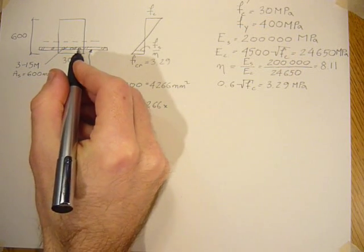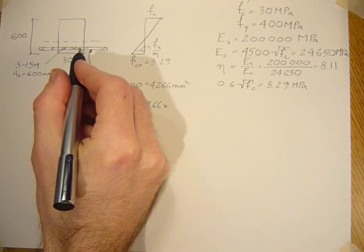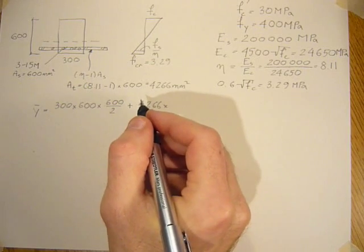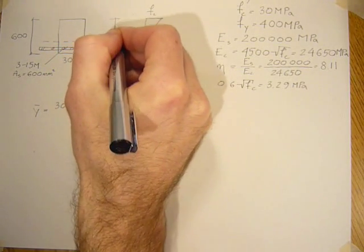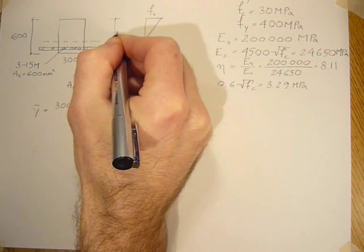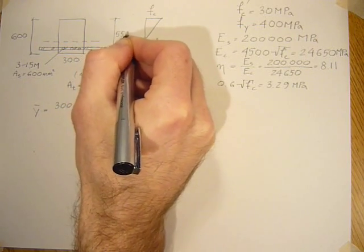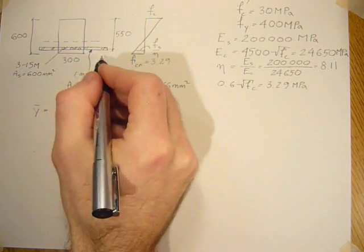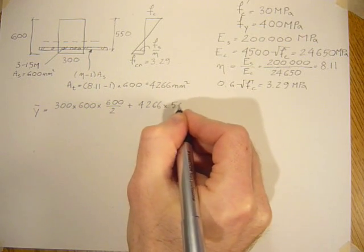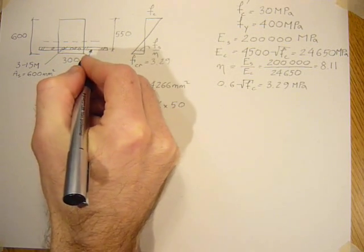So we'll say that this is 550, so that would be 50 mm. The distance from here to here is 600 minus 550.